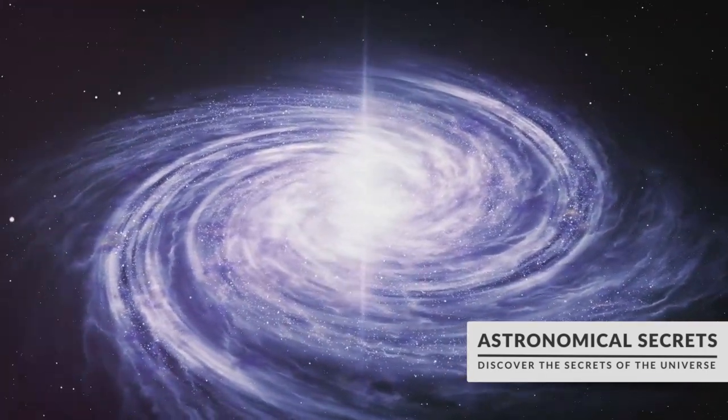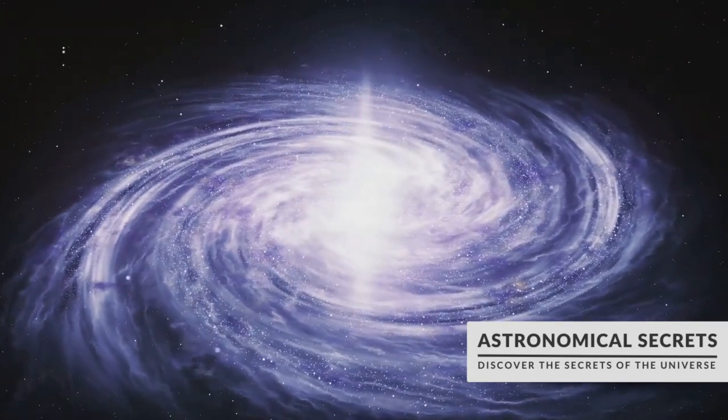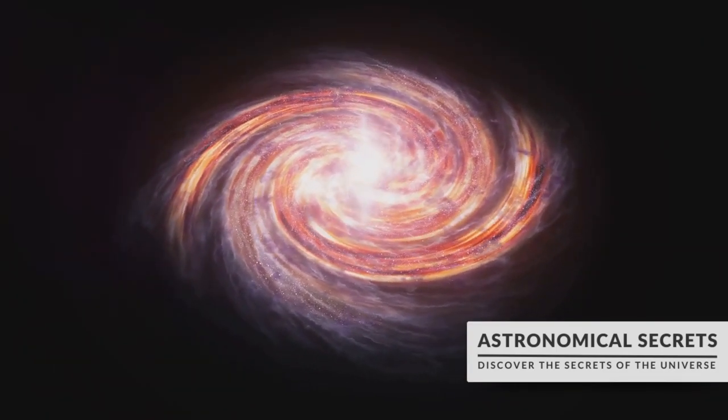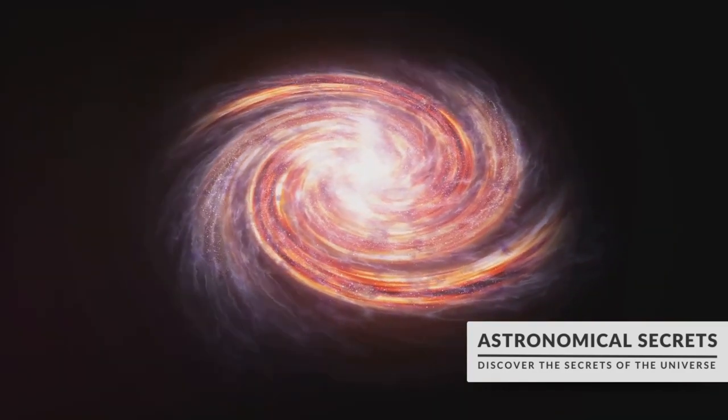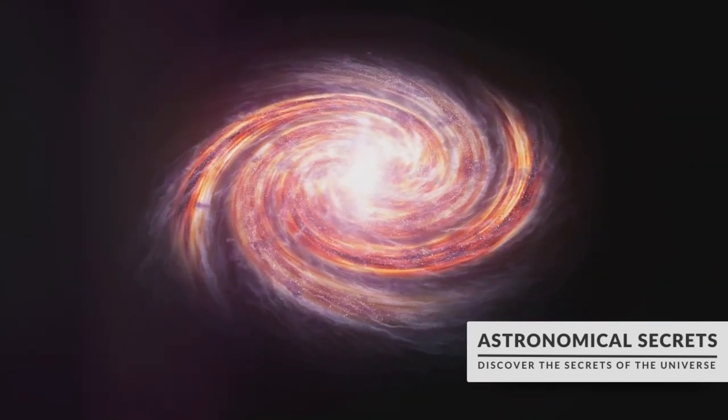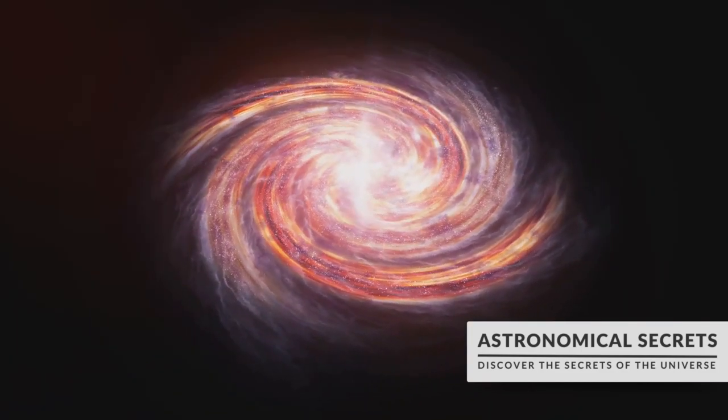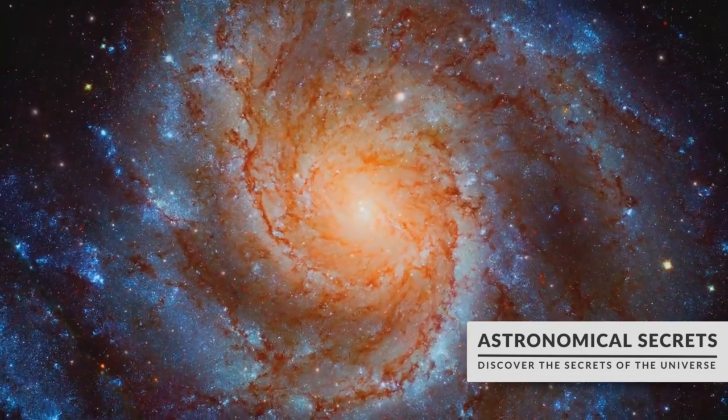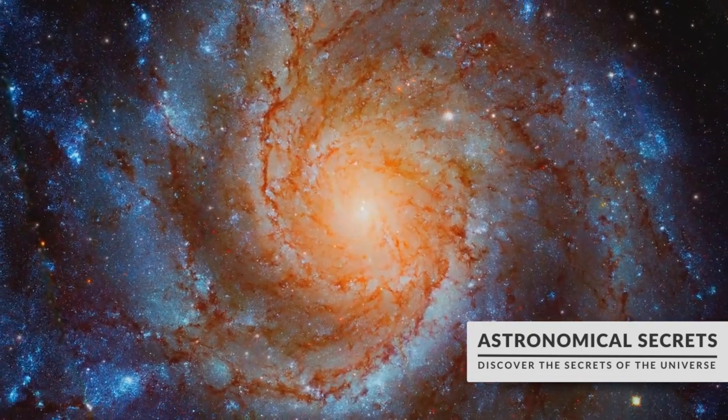The process that leads to these spirals is complex and still not entirely understood. But one popular theory is that they are a result of a density wave, a wave of gravitational pull that travels through the galaxy, compressing the gas and dust in its path and triggering the formation of new stars. These new stars light up the spiral arms, making them visible from billions of light years away.